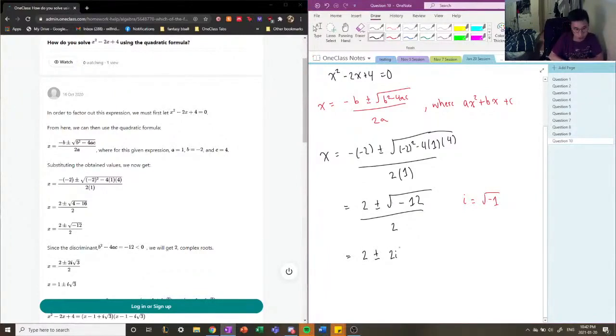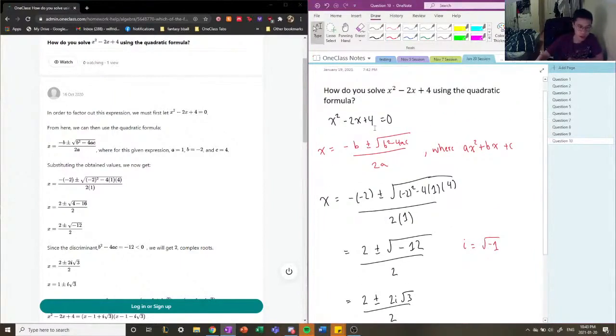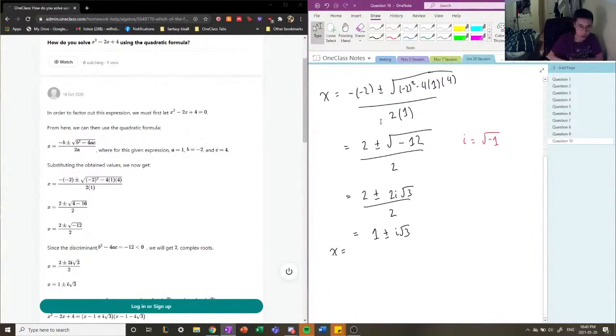And so the negative root of 12, the root of negative 12 is also equal to 2i times root 3. And now we can move on with our evaluation here. So we're going to have 1 plus or minus i root 3. And the values of x that satisfy our quadratic equation here are going to be 1 plus i root 3, and 1 minus i root 3.